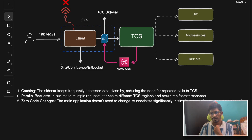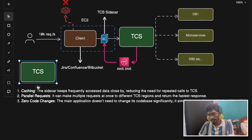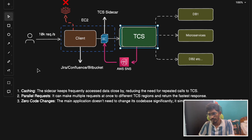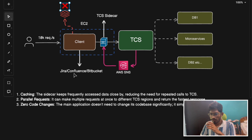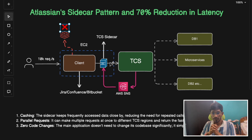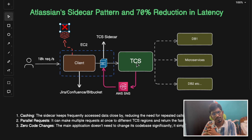Instead of waiting for one TCS region to respond, the sidecar fires parallel requests to multiple TCS regions — for example, one in Europe and one in Australia — and whichever server returns the response first, it sends that back to the client. With all this setup, a mammoth 70% reduction in latency and network calls was observed by Atlassian, and they achieved a P99 latency of around 0.7 milliseconds.